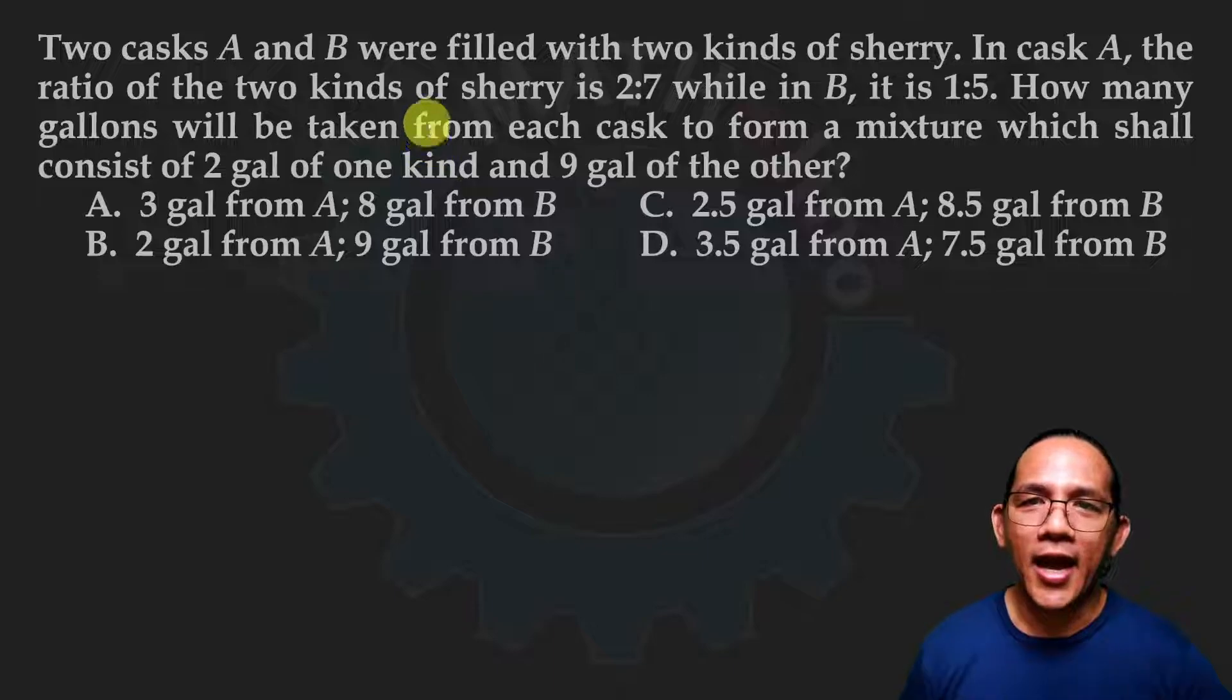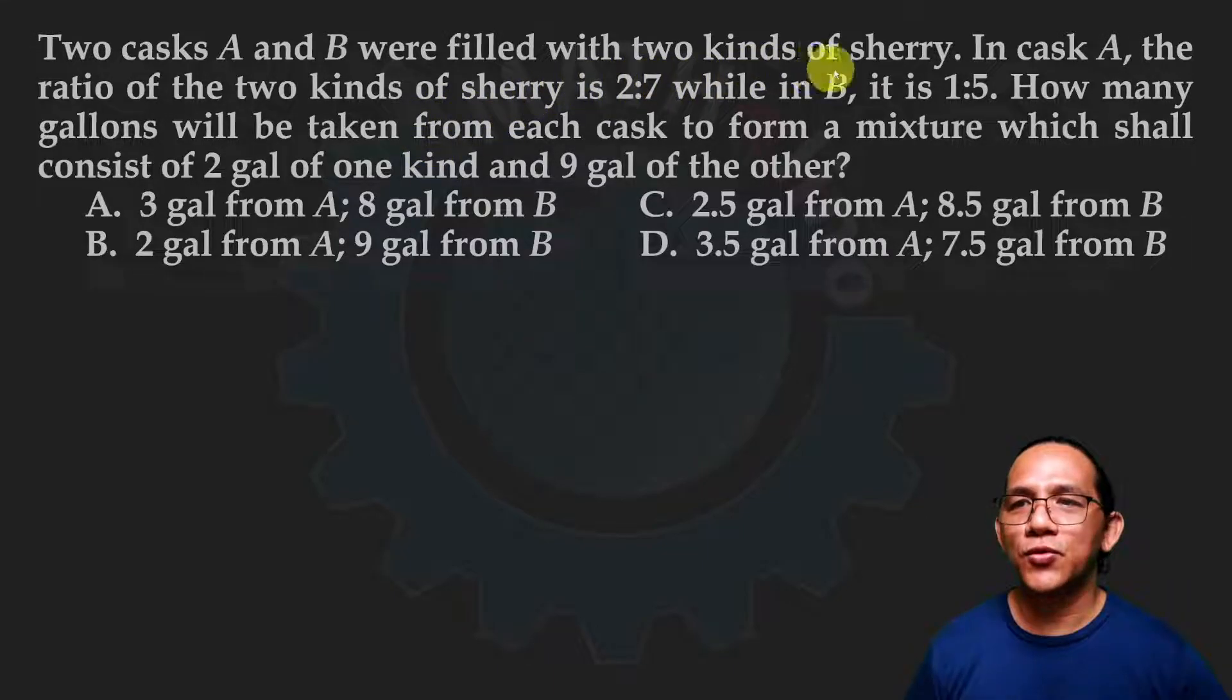Two casks A and B were filled with two kinds of sherry. In cask A, the ratio of the two kinds of sherry is 2 to 7, while in B, it is 1 to 5. How many gallons will be taken from each cask to form a mixture which shall consist of two gallons of one kind and nine gallons of the other?